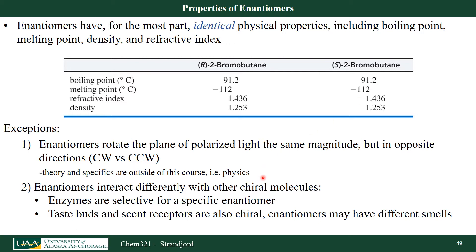The theory and specifics are outside of this course, but a physics course would explain why that's true. The second big exception is that enantiomers interact differently with other chiral molecules. Enzymes are typically chiral and selective for either the S or the R enantiomer. Examples include taste buds — one enantiomer might taste like cloves, the other like spearmint. Our scent receptors and taste bud receptors are also chiral.